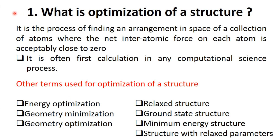What is optimization of a structure? It is the process of finding an arrangement in space of a collection of atoms where the net interatomic force on each atom in the system is acceptably close to zero. It is often the first calculation in any computational science process.